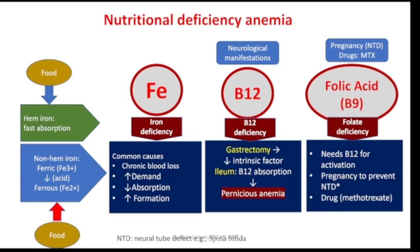Normocytic anemia is associated with chronic disease or recent blood loss. For macrocytic anemia, another name is megaloblastic anemia — the deficiency of B12 and folic acid leads to this type. We have three types of anemia according to the deficiency: iron deficiency anemia, B12 deficiency anemia, and folate deficiency anemia.